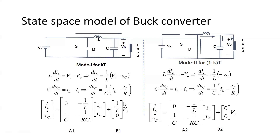We now have two differential equations, diL/dt and dvC/dt, which should be represented in matrix form to get the state vector. In matrix form: [iL-dot, vC-dot] equals [0, -1/L; 1/C, -1/RC] times [iL, vC] plus [1/L; 0] times Vs. The matrix [0, -1/L; 1/C, -1/RC] is the state matrix A1, [1/L; 0] is input matrix B1, and [iL, vC] is the state variable vector.